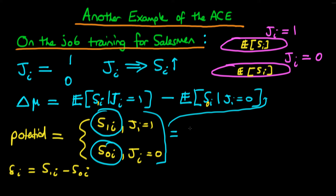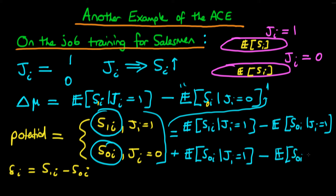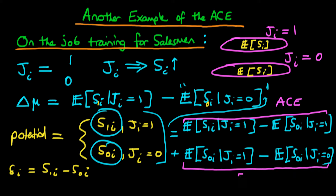Much like before, we can work at our expression a little bit, and from that we will get something which has both the average causal effect and the selection bias effect. What we do is take the expected value of s1i given ji equals one, subtract the expected value of s0i given ji equals one, then add back the expected value of s0i given ji equals one, and finally subtract the expected value of s0i given ji equals zero. This top expression is what we call the average causal effect, and this bottom expression is what we refer to as the selection bias effect.